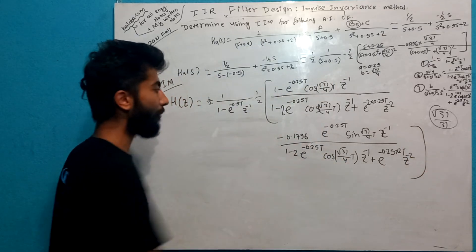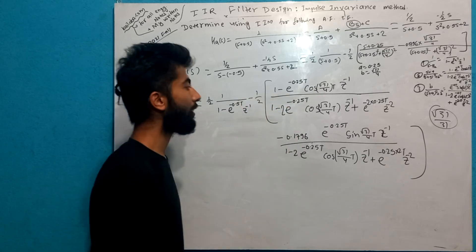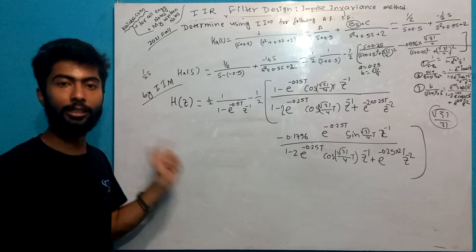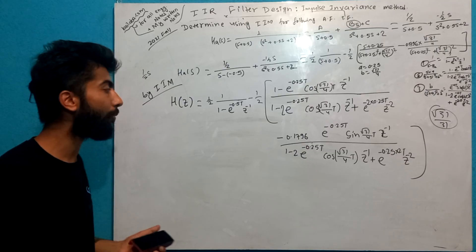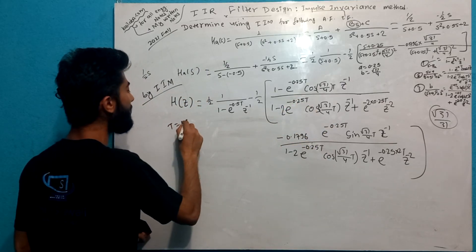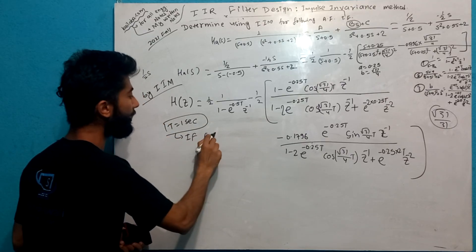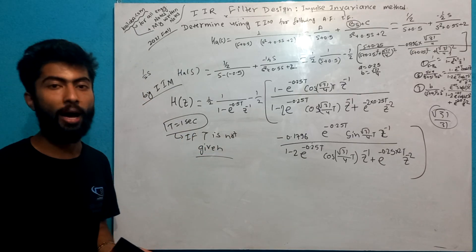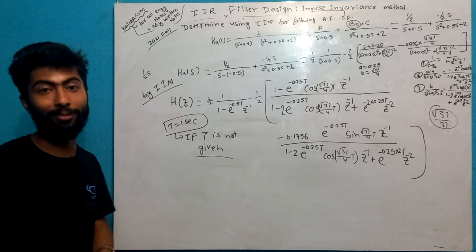This is our desired digital filter. If you look at the sampling rate, T is equal to 1 by fs value. We normally assume T is equal to 1 second if T is not given. If T is not given, the value will be taken as 1 second. This is all about the impulse invariance method.